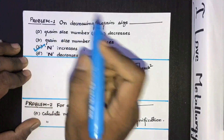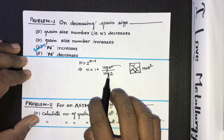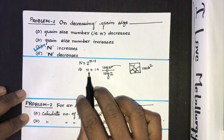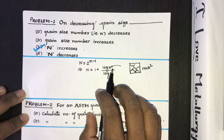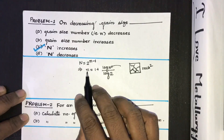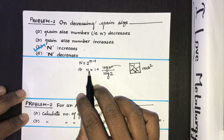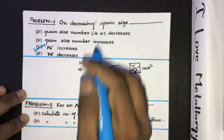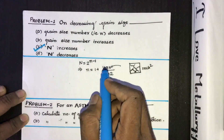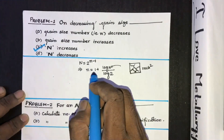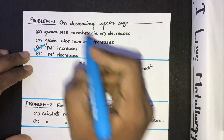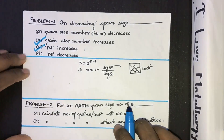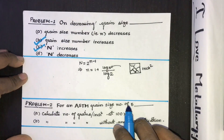So option C is correct — when we decrease the grain size, capital N increases. And from the equation, we see that if capital N increases, then small n, the grain size number, also increases. So on decreasing grain size, both small n and capital N increase. The correct answer is B and C.